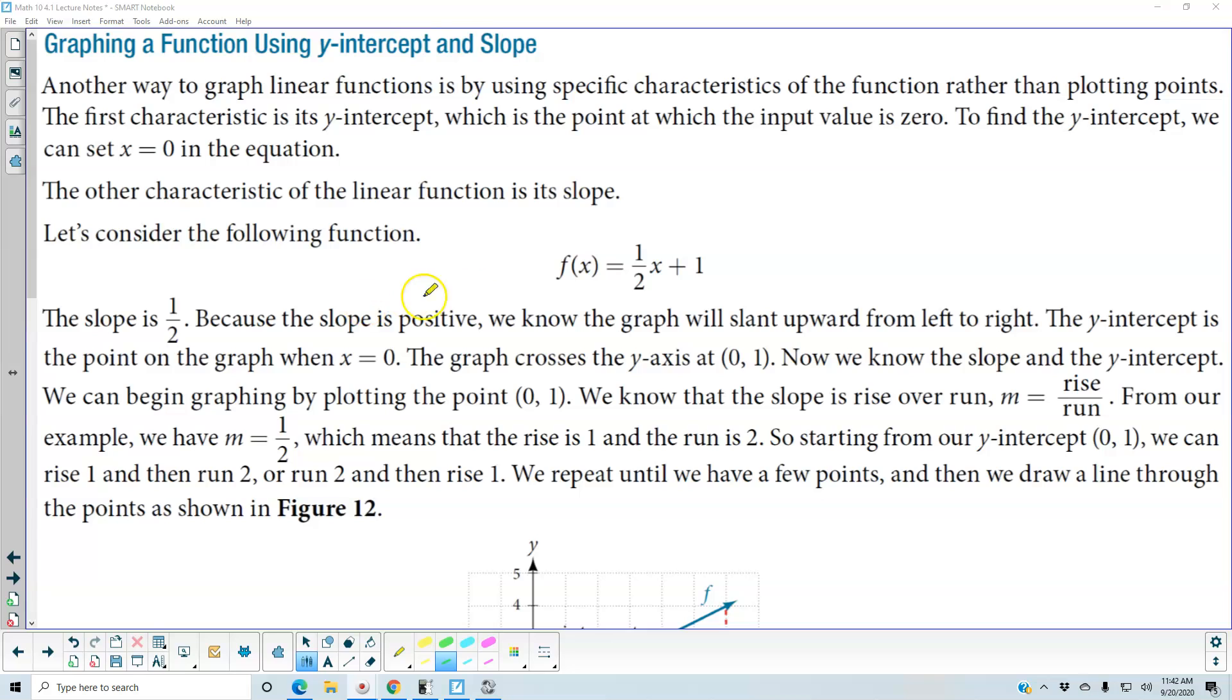Let's consider the following function: f(x) is equal to one-half x plus one. So one-half represents our slope. The slope is one-half. Because the slope is positive, we know the graph is going to slant upward from left to right.